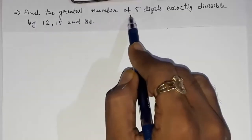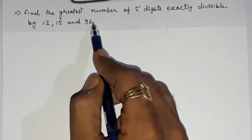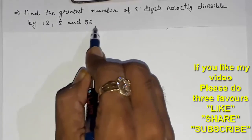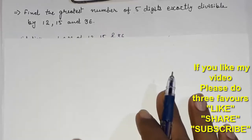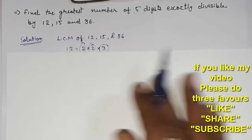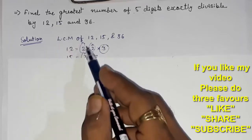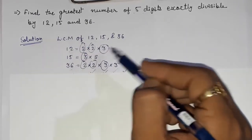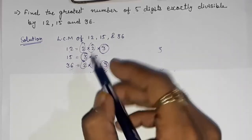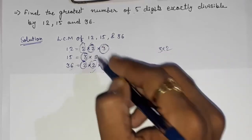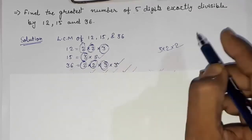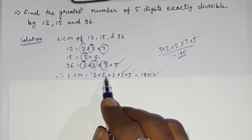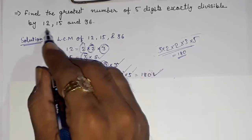Next question: Find the greatest five-digit number exactly divisible by 12, 15, and 36. First we find the LCM of 12, 15, and 36 by prime factorization. Factors: 12 = 2 × 2 × 3, 15 = 3 × 5, 36 = 2 × 2 × 3 × 3. Taking all required factors: LCM = 2 × 2 × 3 × 3 × 5 = 180.